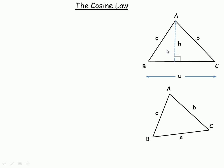Now in this triangle I'm going to label the bottom — I'm going to divide it into two parts, not equal parts. I'm going to call the distance from angle B to where this altitude comes down x. And whatever x is and whatever a is, we subtract those two to find the remaining distance. So the distance from where this altitude comes down to C is a minus x.